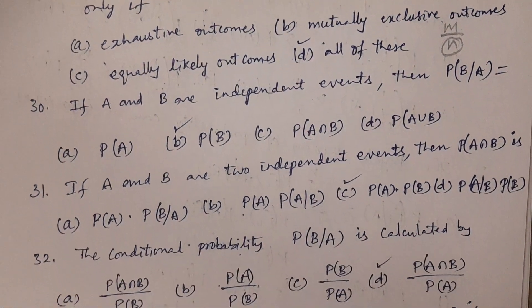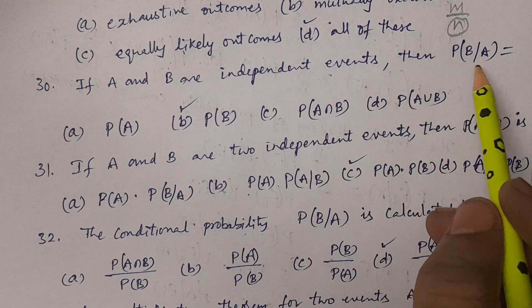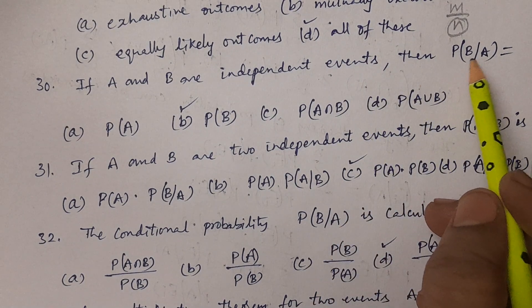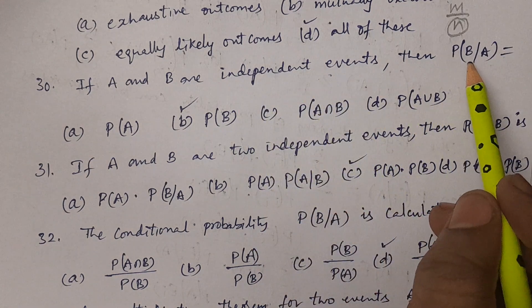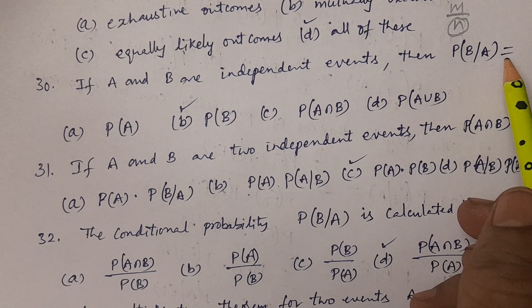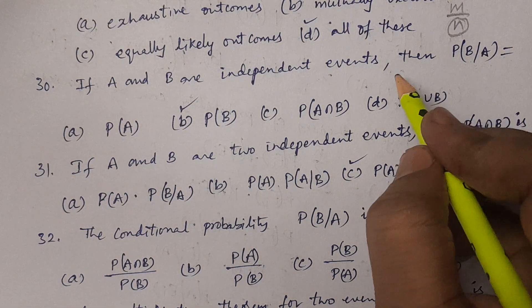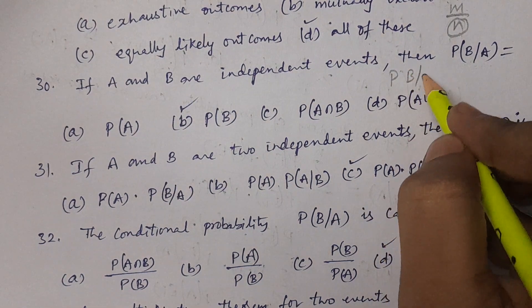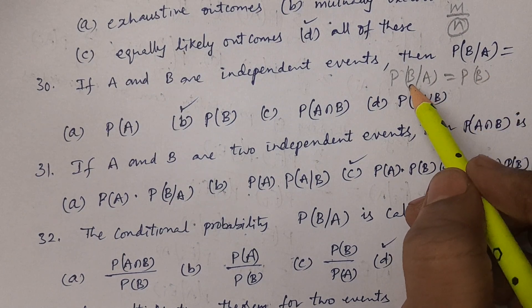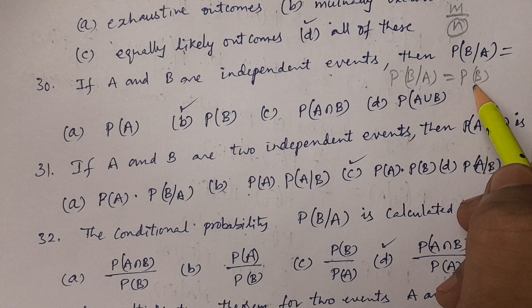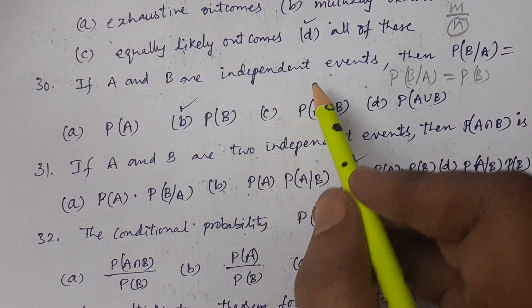Question number 30: If A and B are independent events, then probability of B given A is equal to what? If they are independent, unconditional probability and conditional probability are the same — that is, P(B|A) = P(B).